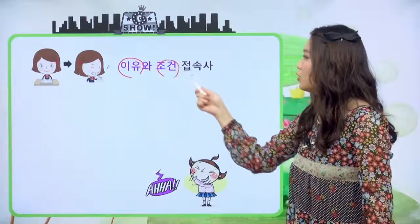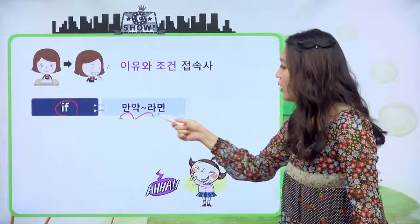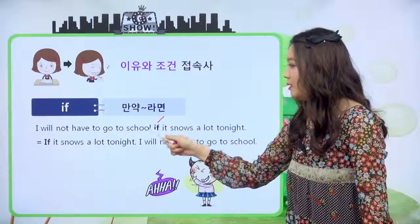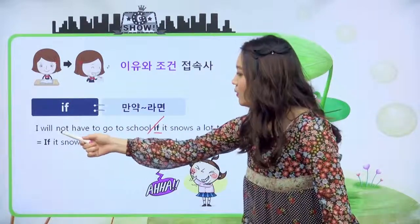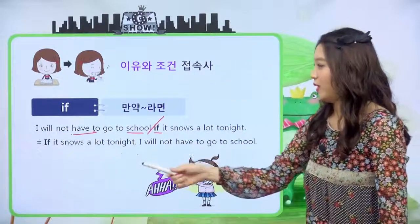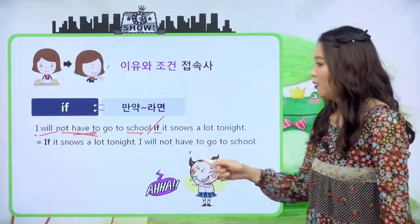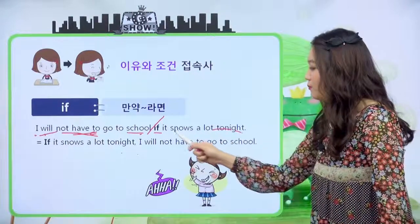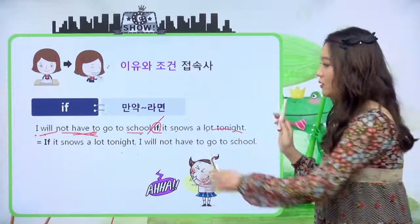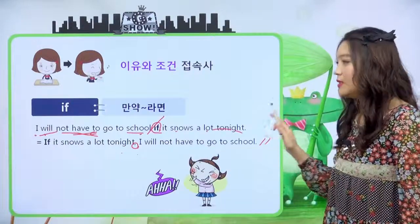이유와 조건 접속사입니다. 첫 번째 if예요. if는 만약 뭐뭐라면 이라고 해석이 돼요. 예문을 보면 I will not have to go to school if it snows a lot tonight. 나는 학교에 가지 않아도 될 것이다. 만약 오늘 밤에 눈이 많이 온다면. 그래서 얘가 뜻이 뭐뭐라면이죠. 순서를 바꾸면 If it snows a lot tonight, I will not have to go to school 이런 문장이 되겠네요.